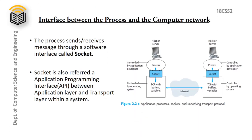The interface between the process and the computer network: messages need to be sent from one process to another through the application layer and transport layer. The interface connecting these two layers is called a socket, also referred to as the Application Programming Interface (API). Processes are controlled by the developer, while TCP with its buffers and variables is controlled by the operating system.